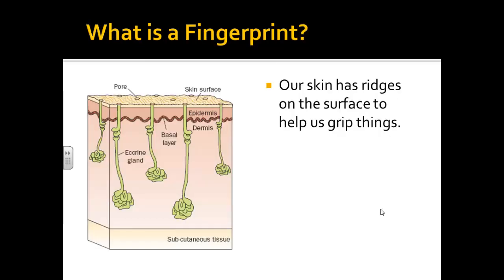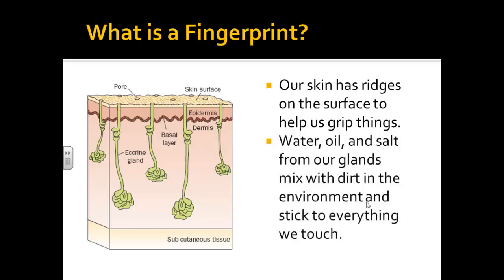So what in the world is a fingerprint? Our skin has all these ridges to help us grip things — friction allows us to do that. We have all these different glands, and water, oil, and salts will all come out. We also get dirt. There are all kinds of things on there, and we leave that residue behind anytime we touch something.